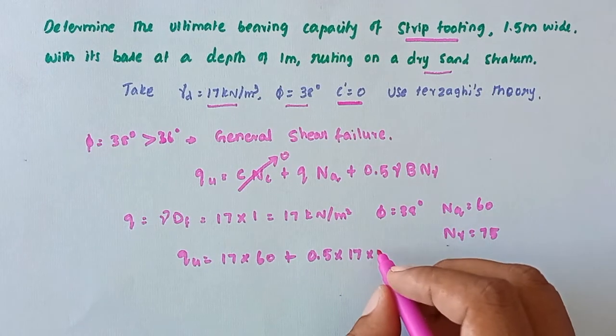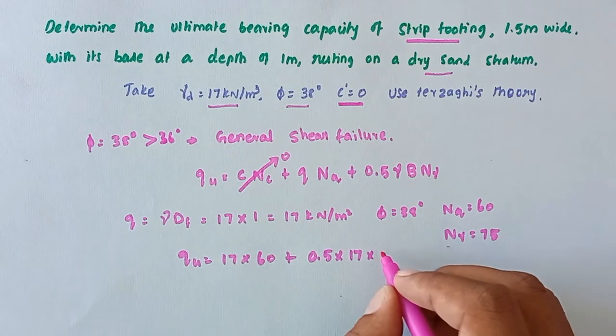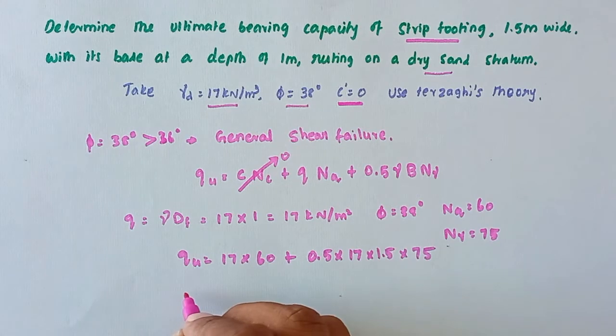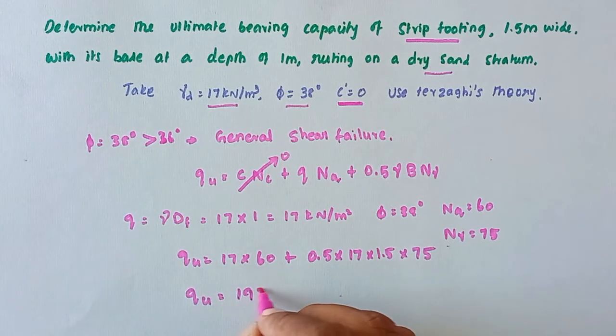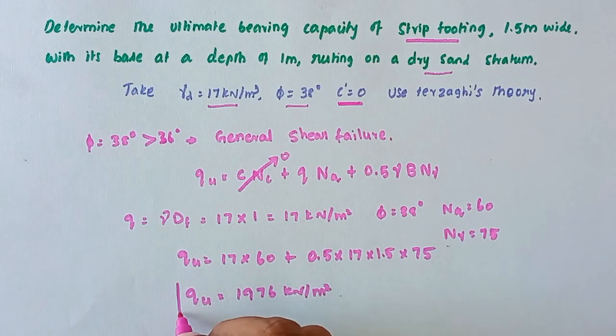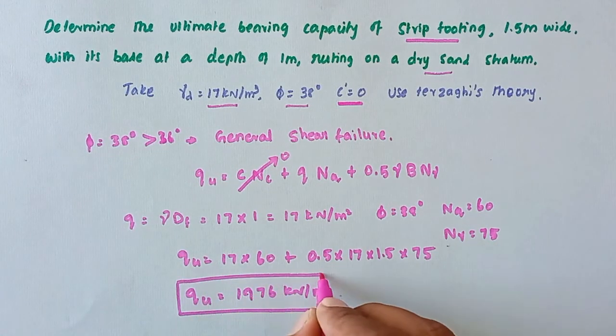so B value is 1.5 into Nγ value is 75. So solving this we got the value qu = 1976 kN/m². So this is the ultimate bearing capacity.